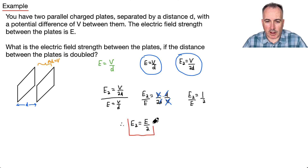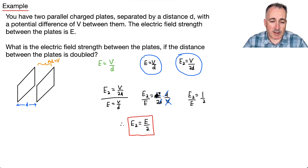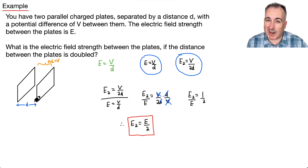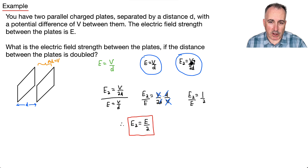If you've done a lot of ratios questions, you won't even bother with all these steps — but I'm just trying to show you how we can do it. It should make sense that the electric field strength is smaller because the plates got farther apart. Since D got twice as big and E is 1 over that, that's why it's 1 over 2.